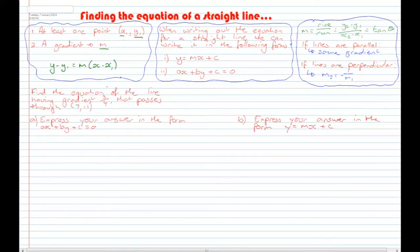Find the equation of the line having gradient 3/4 that passes through the point (7, 11). (a) Express your answer in the form AX + BY + C = 0, and (b) express your answer in the form Y = MX + C. Alright, so to find the equation of the line I must have a gradient and a point. Let's have a look through the question. I've got my gradient and a point, so I can substitute straight into this original formula.